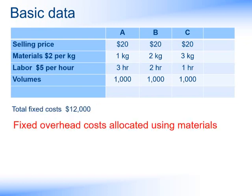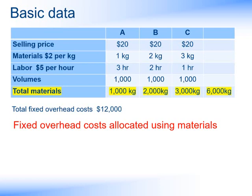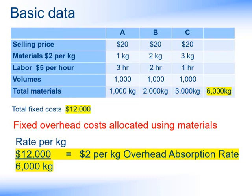First of all, let's look at using an overhead absorption rate using the materials for each product. In order to do this, we need to calculate the total material used. So for product A, if it takes one kilogram to produce one product, to produce a thousand it takes a thousand kilograms. And the same process for products B and C, which gives us a total of 6,000 kilograms. We can now use our $12,000 for the fixed overheads, divide that by the 6,000 kilograms of material used, and that will give us a rate of $2 per kilogram — what we call an overhead absorption rate.